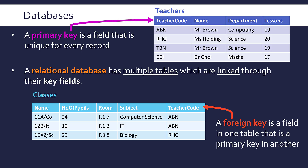Subject, room, and number of pupils are not foreign keys because they're not primary keys in another table. Name isn't a foreign key either — it's not a key in another table; it's the primary key for the classes table. Having a foreign key enables you to connect up the two tables. Looking at 11A Co — the year 11 Computer Science class — I can see ABN is the teacher, so I can look up ABN in the other table.